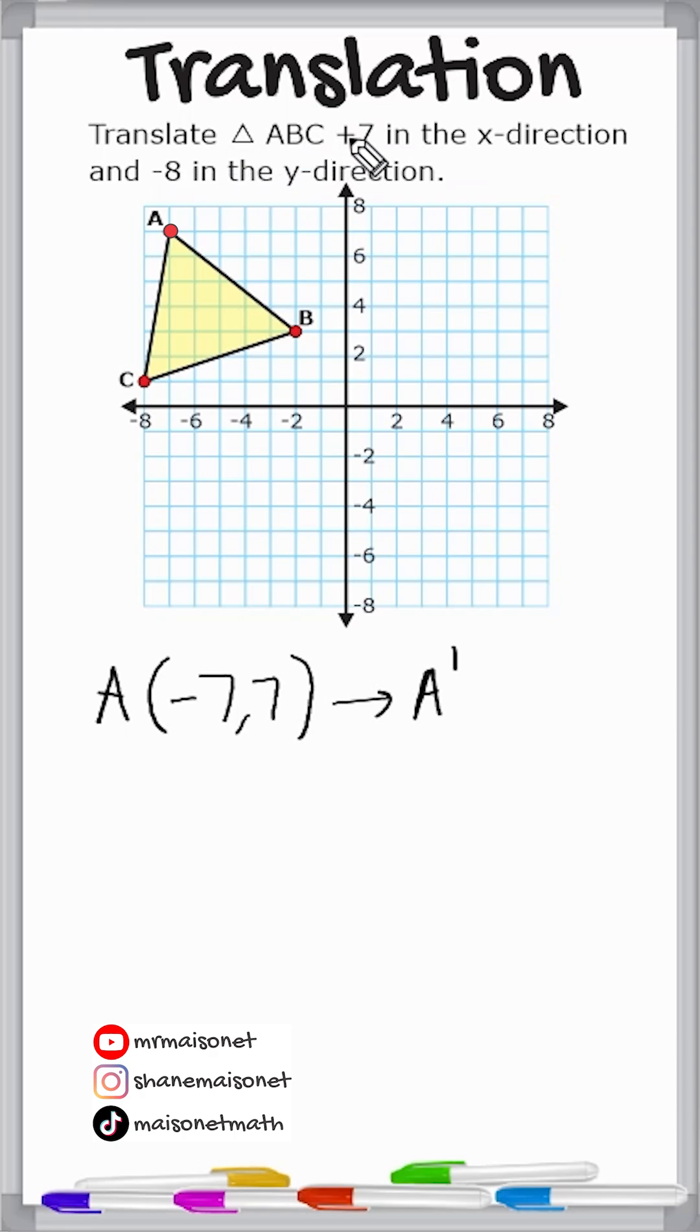So what we're going to do is add 7 to our x-value, and we are going to subtract 8 from our y-value. So if we combine these x-values here, these are opposite integers, so that results in 0. 7 minus 8 results in negative 1. So this will be where the A point is going to be translated to.